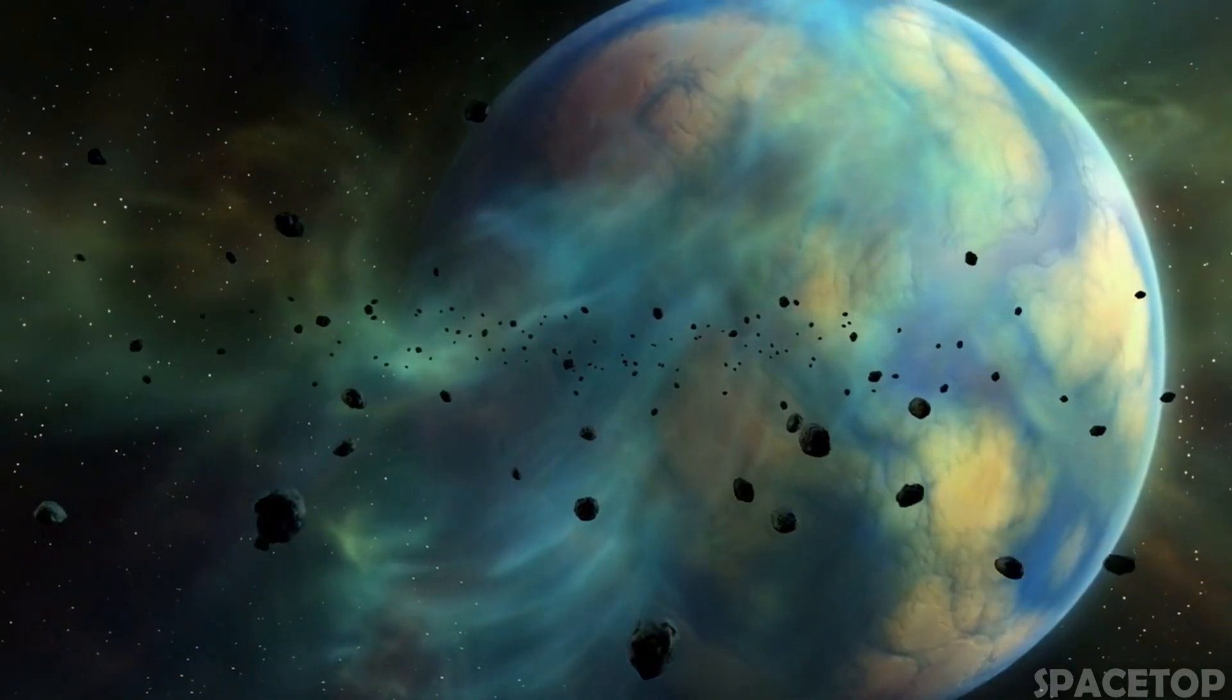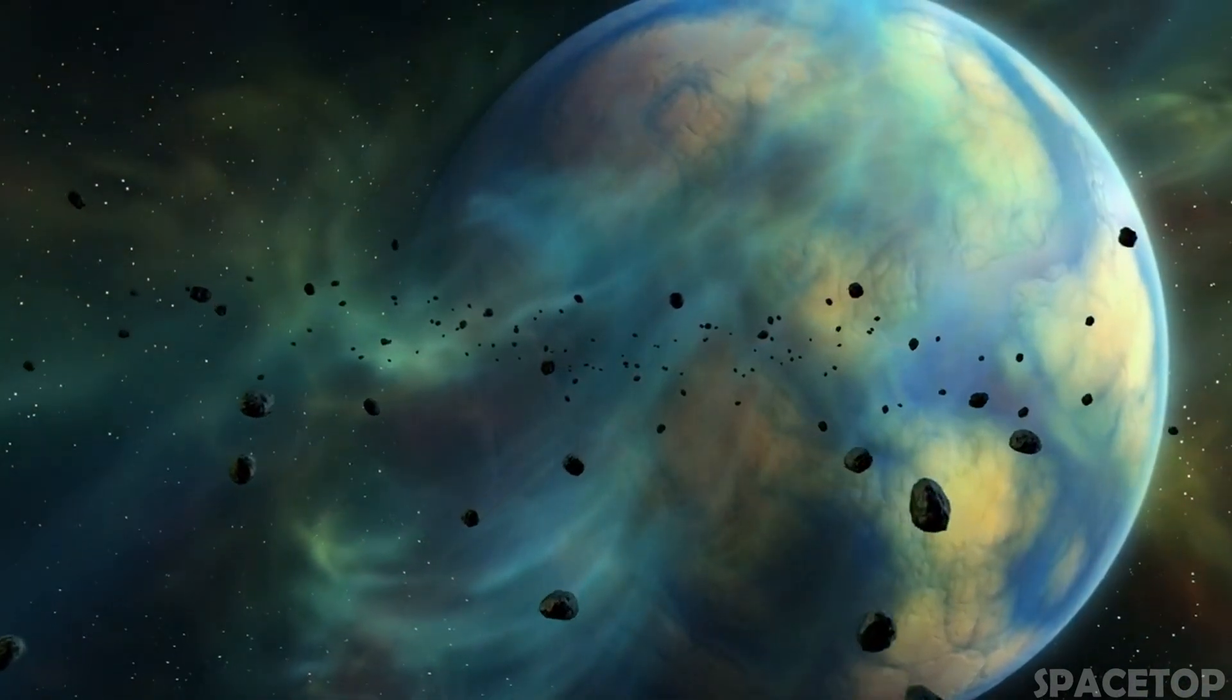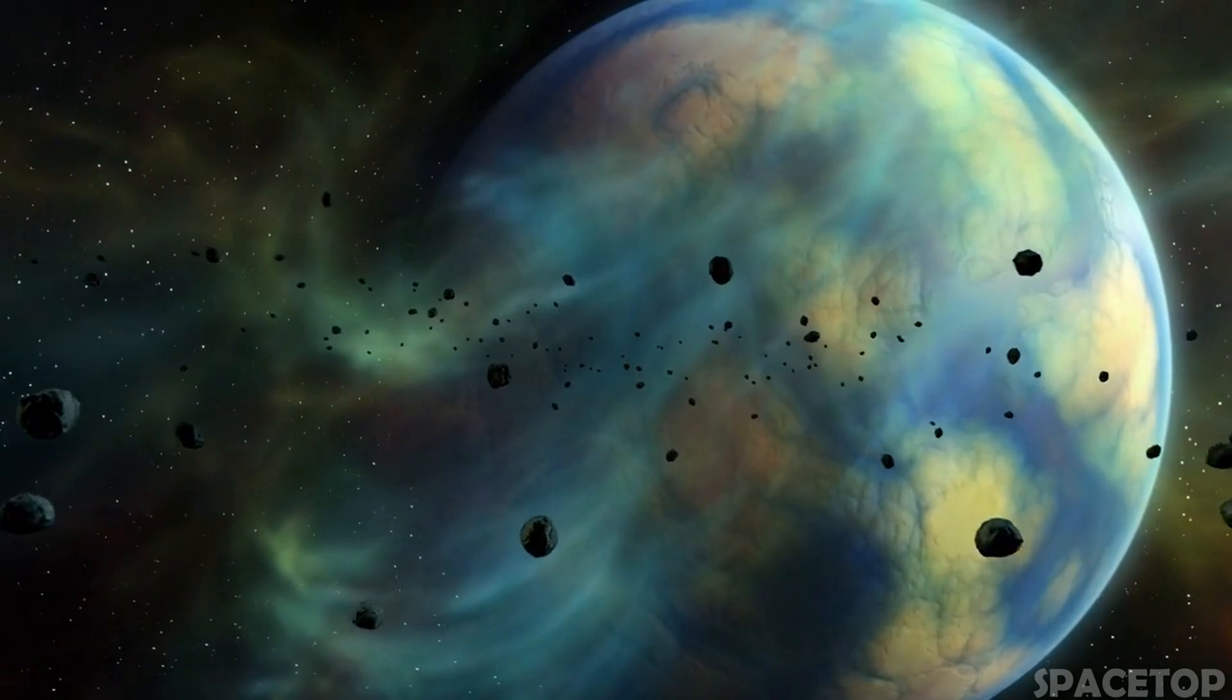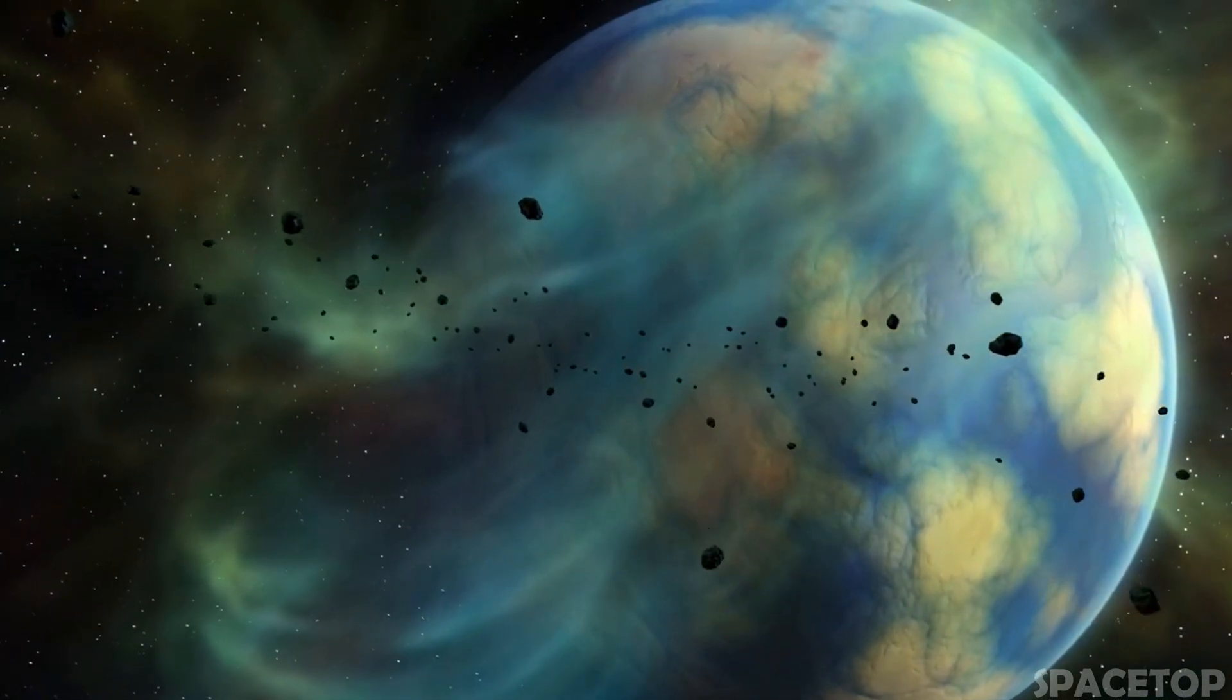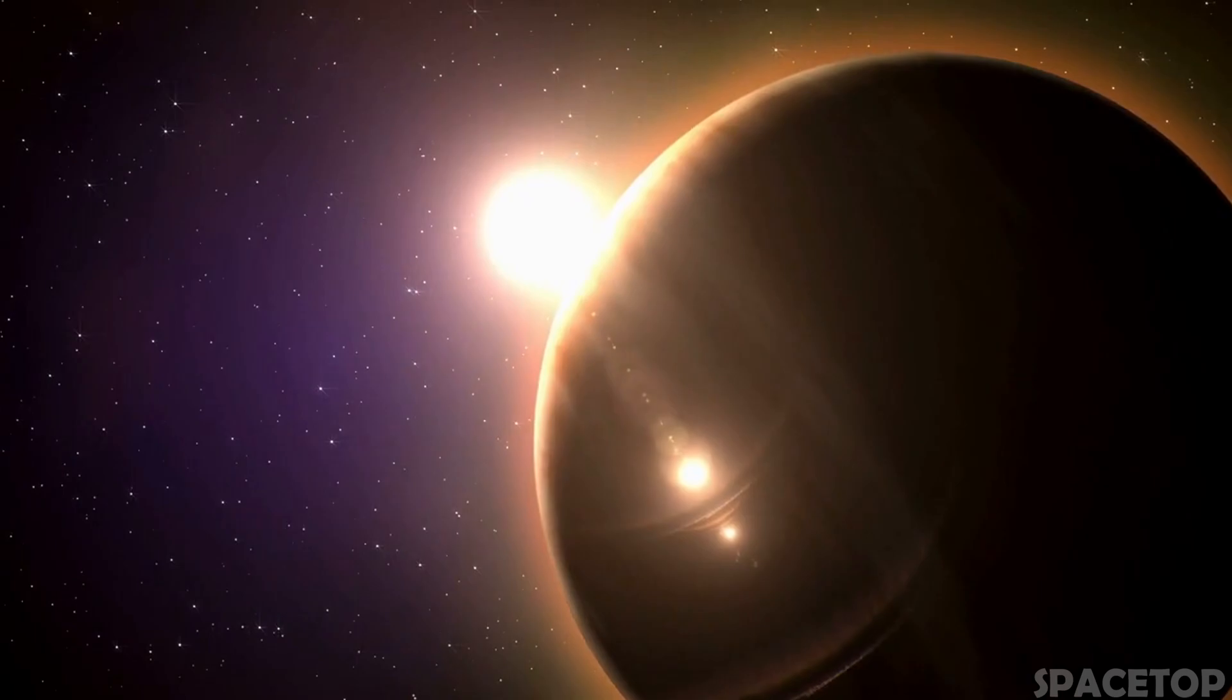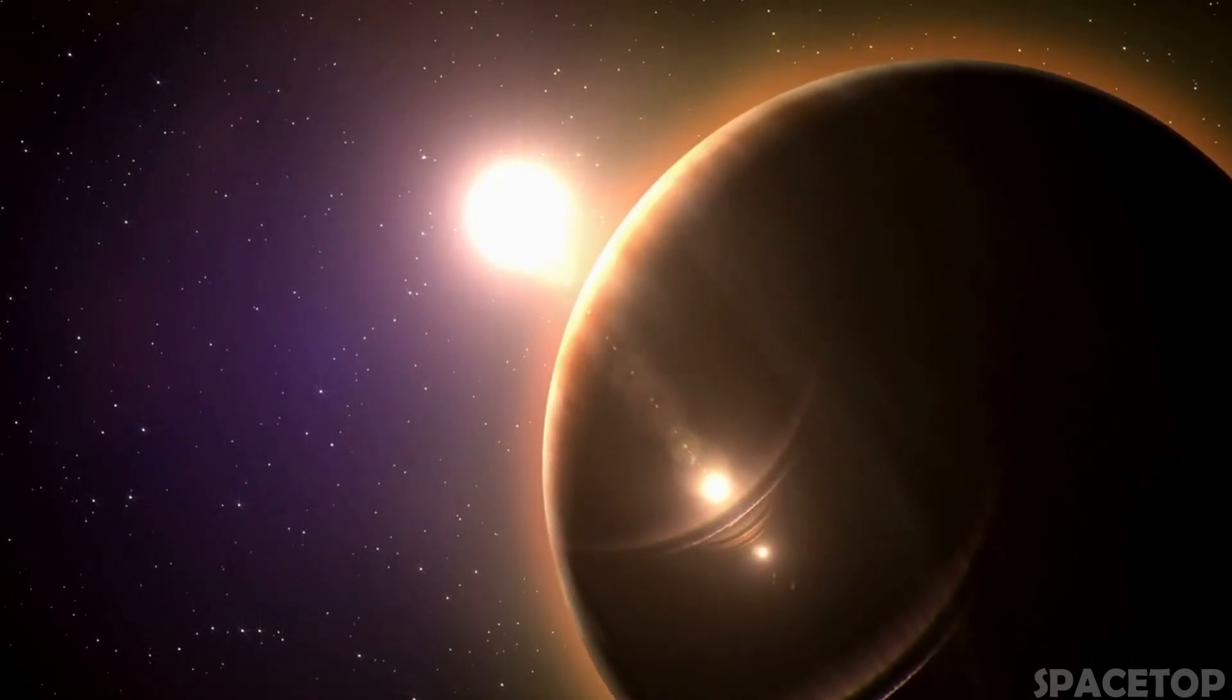Other exoplanets the size of Jupiter revolve not around one, but around two stars. If you stand on the surface of one of these planets, you will find yourself in orbit capable of seeing a double sunset.